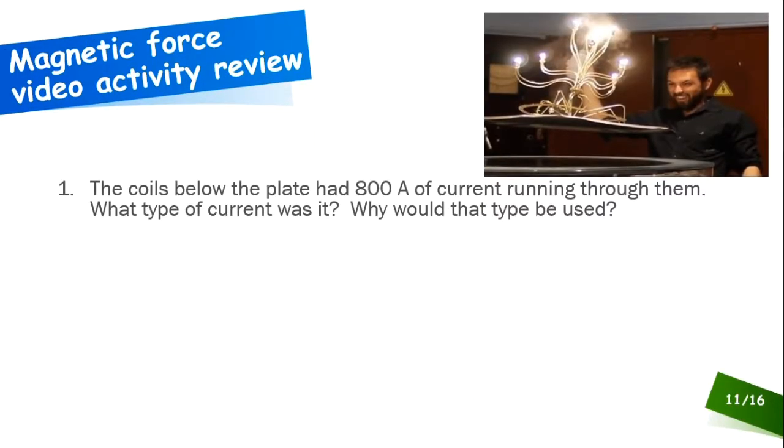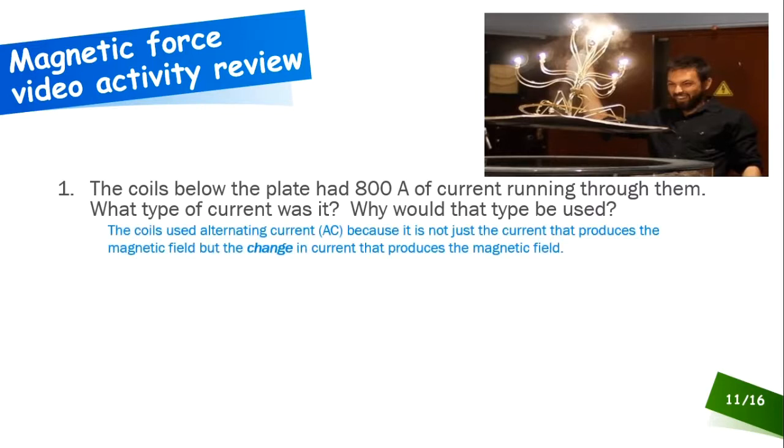Okay, let's see how you did with this. First question. The coils below the plate had 800 amps of current running through them. What type of current was it, and why would that type be used? The coils were using alternating current. Because it's not just the presence of a charge that's producing the magnetic field, but the change in current that's producing the magnetic field. With alternating current, you get not just a change in the charge that's flowing through the wire, but you also get a change in direction. It switches back and forth, and that change in motion is what creates the magnetic field.